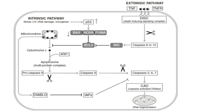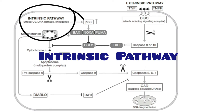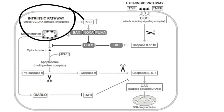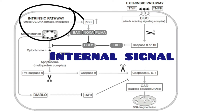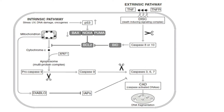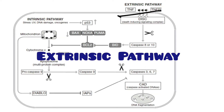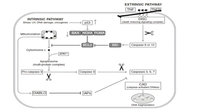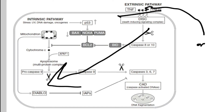There are two pathways normal cells can use to undergo apoptosis. The first one is the intrinsic pathway, which means that the initiation of apoptosis starts by an internal signal, like DNA damage. The second one is the extrinsic pathway, and this happens when a signal comes from outside the cell, attaches to its receptor, and forces the cell to die.